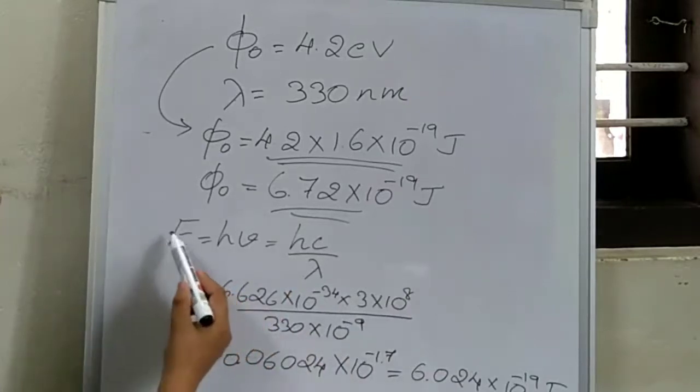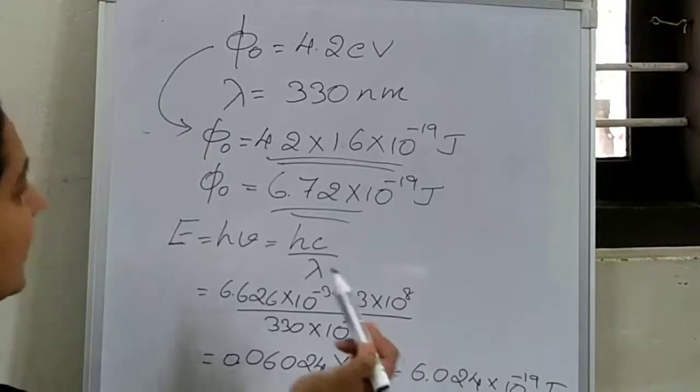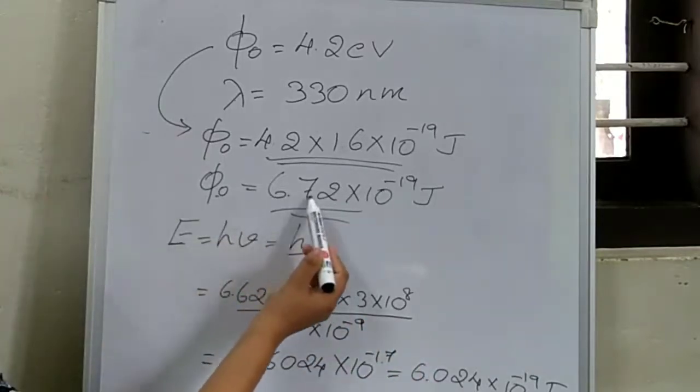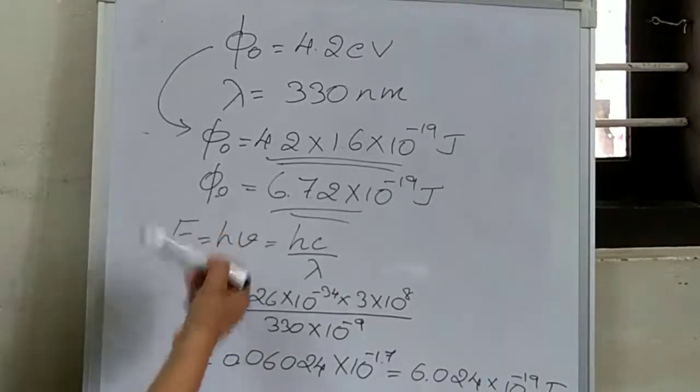Here, the energy of the incident radiation is 6.02 into 10 raise to minus 19. Work function is 6.72 into 10 raise to minus 19. Here, work function is more than the energy of the incident radiation.